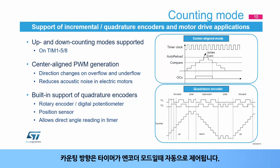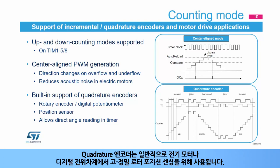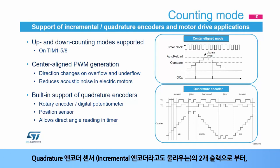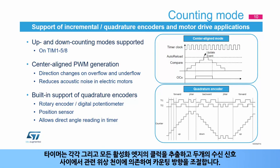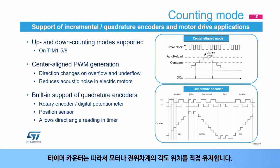The counting direction can also be automatically handled when the timer is in encoder mode. Quadrature encoders are typically used for high-accuracy rotor position sensing in electrical motors or for digital potentiometers. From the two outputs of a quadrature encoder sensor (also called an incremental encoder), the timer extracts a clock on each active edge and adjusts the counting direction depending on the relative phase shift between the two incoming signals. The timer counter thus directly holds the angular position of the motor or potentiometer.